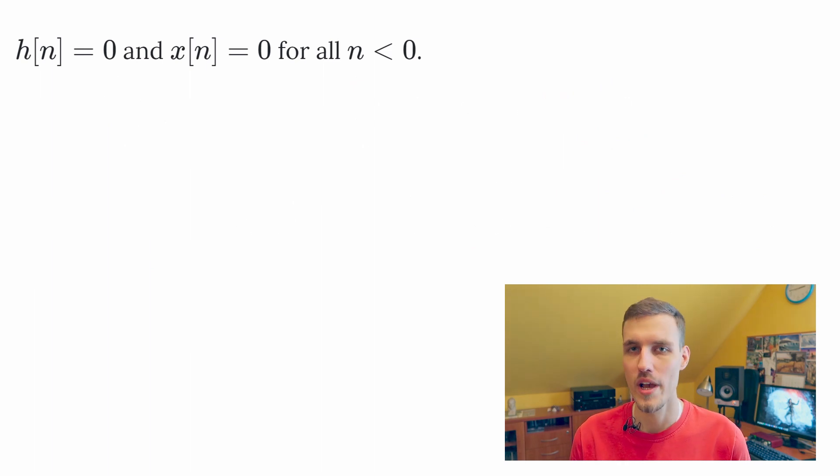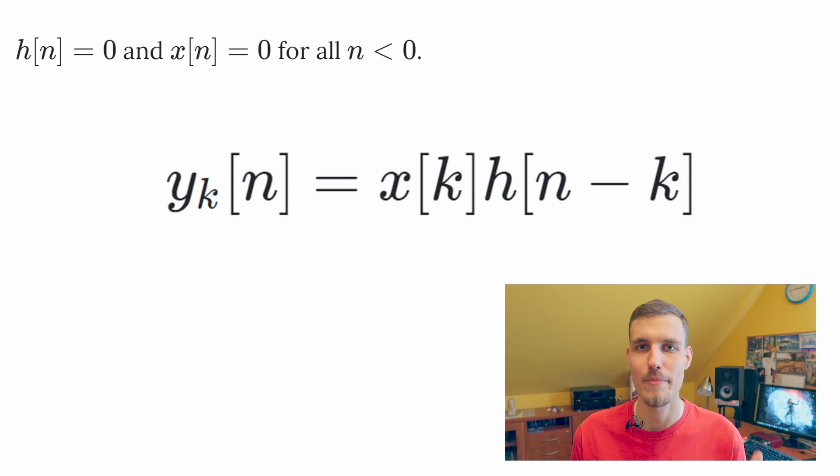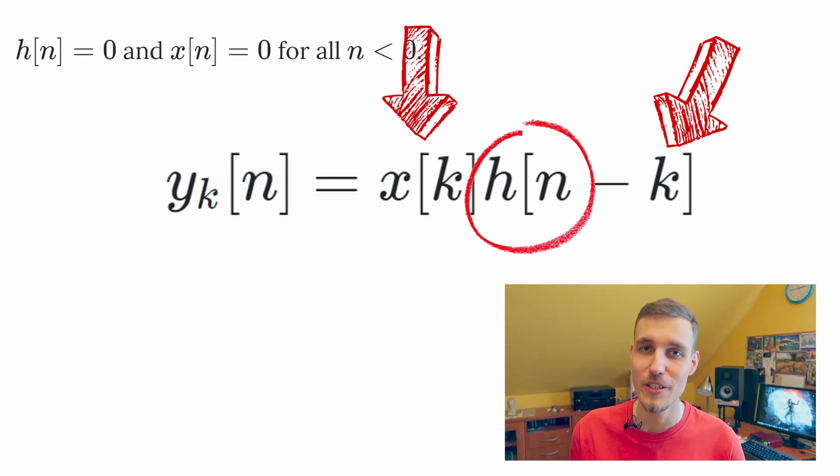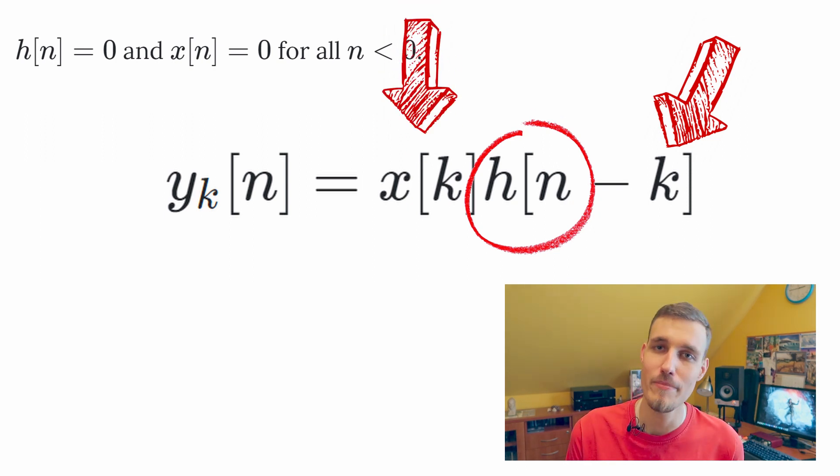There is also another way of looking at it. We can fix k, for example. What happens then? It turns out that we at the output get the sum of the delayed and weighted impulse response of the filters. And the corresponding weights are the subsequent samples of the input signals.